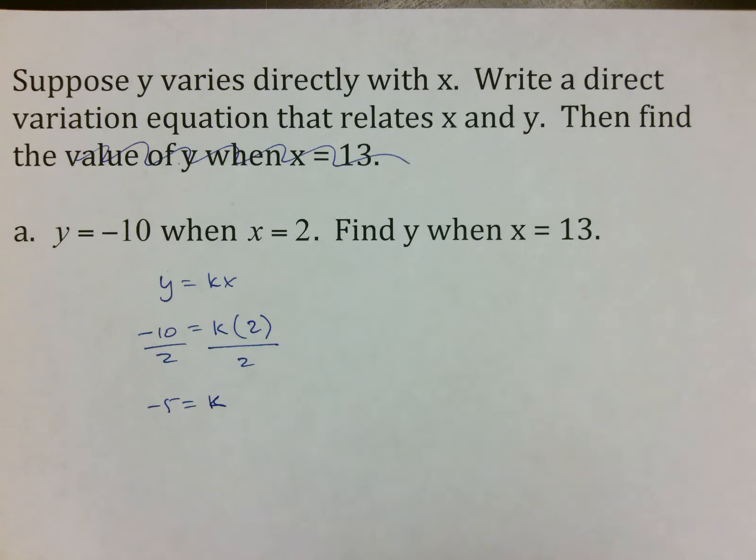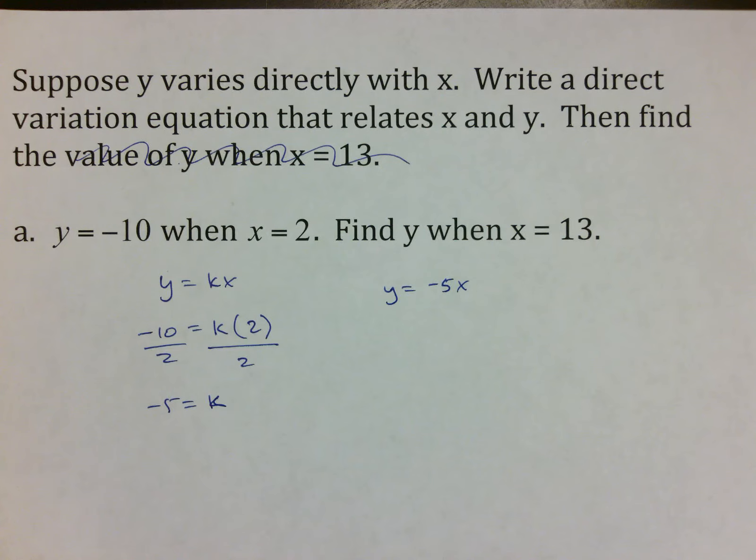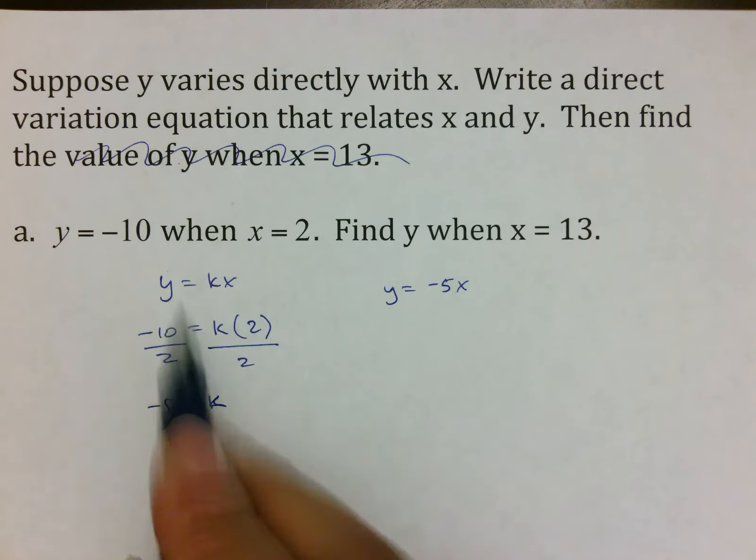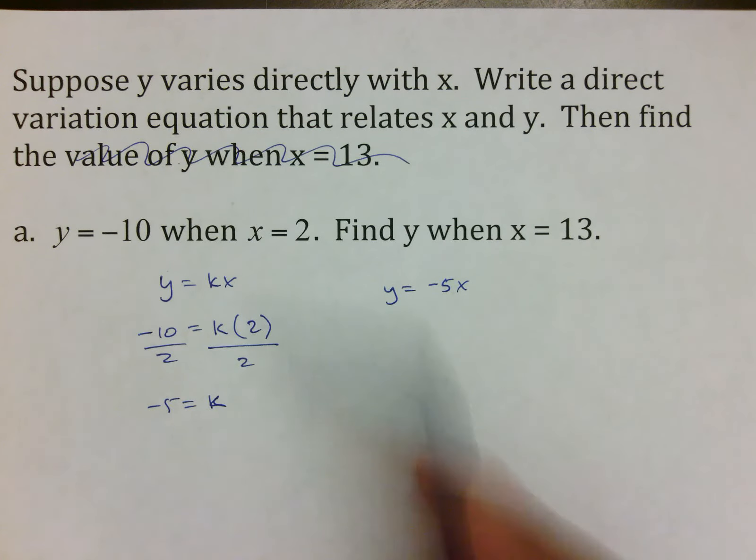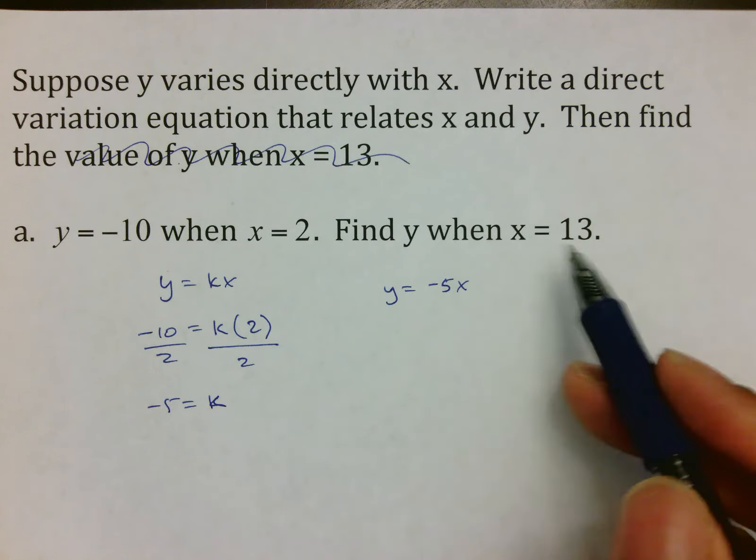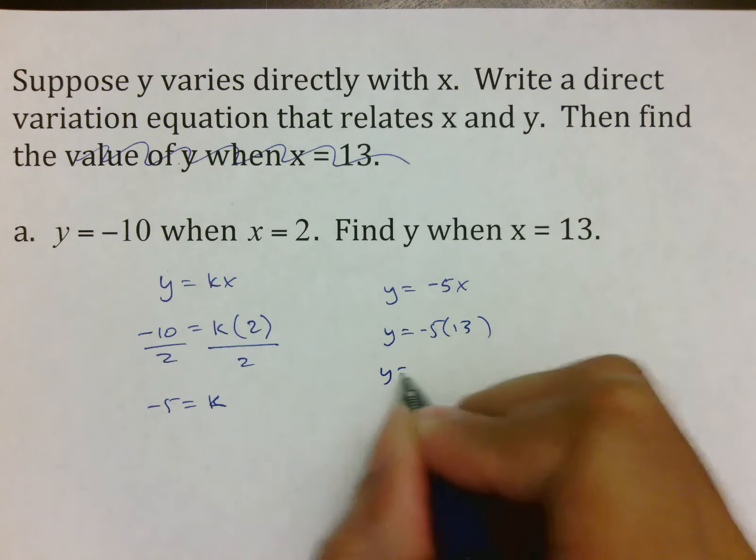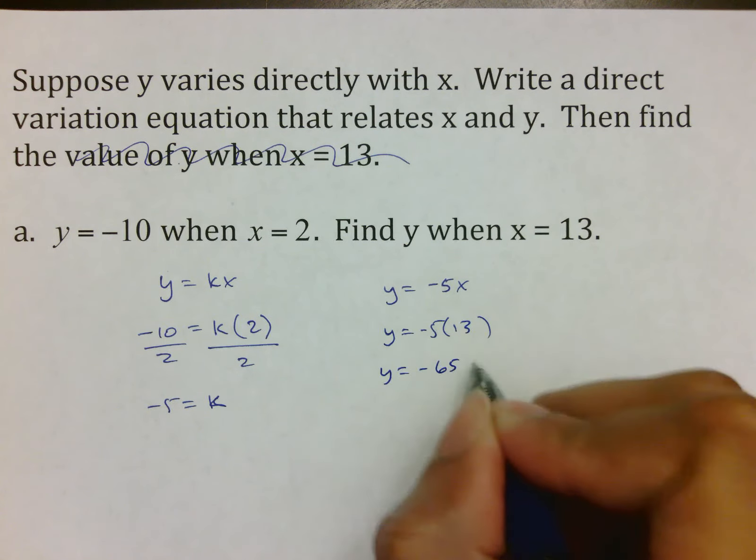It means now we take this -5 and we plug it in for k. So the reason we found k was so that we could take it from a general formula to a formula with an actual constant. And then the next thing you do is you actually plug in what you have, which is y equals -5 times 13. Which when you do your work would make it -65.